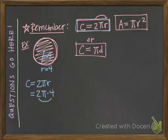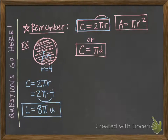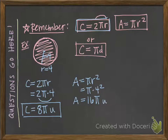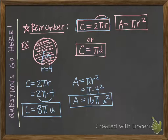The 2 and the 4 can be multiplied together, and then pi will go at the end, so the circumference is 8 pi units. To find the area, we're going to use the area formula, pi r squared. Our radius is 4, so pi times 4 squared. Order of operations says square first — 4 squared is 16 — so we write 16 in front of the pi. Our area, which is always in units squared, will be 16 pi units squared. So this is the circumference, and this is the area.